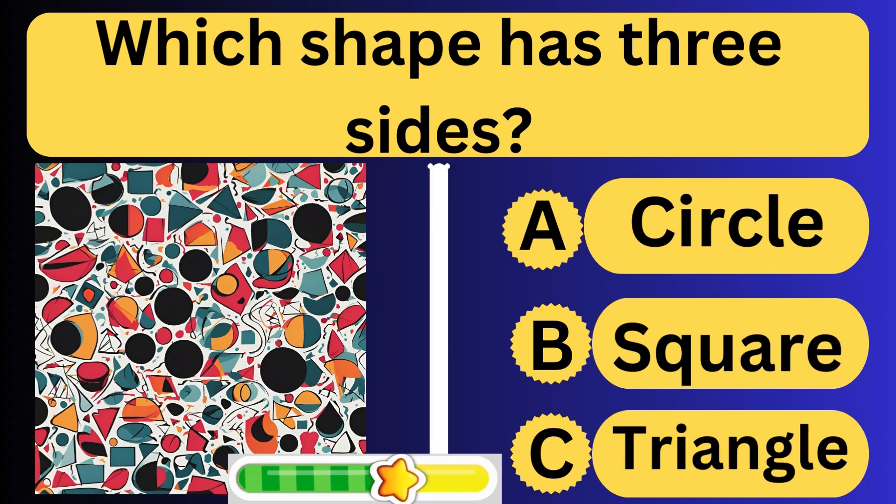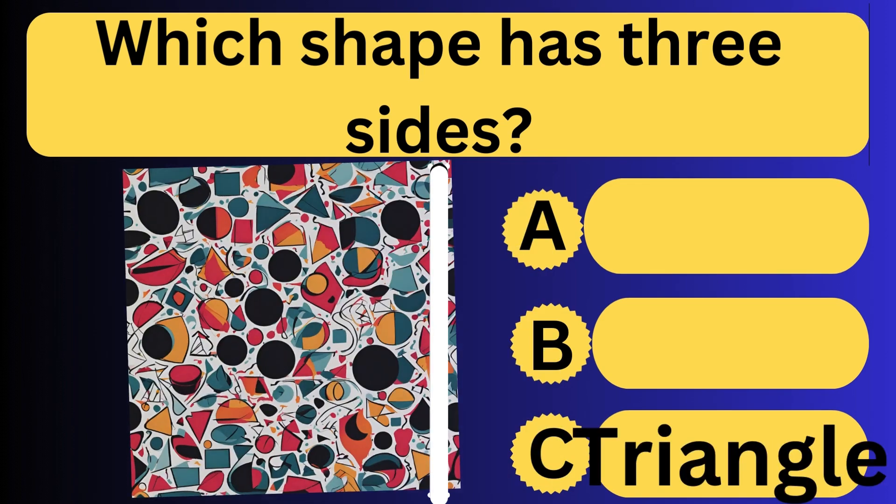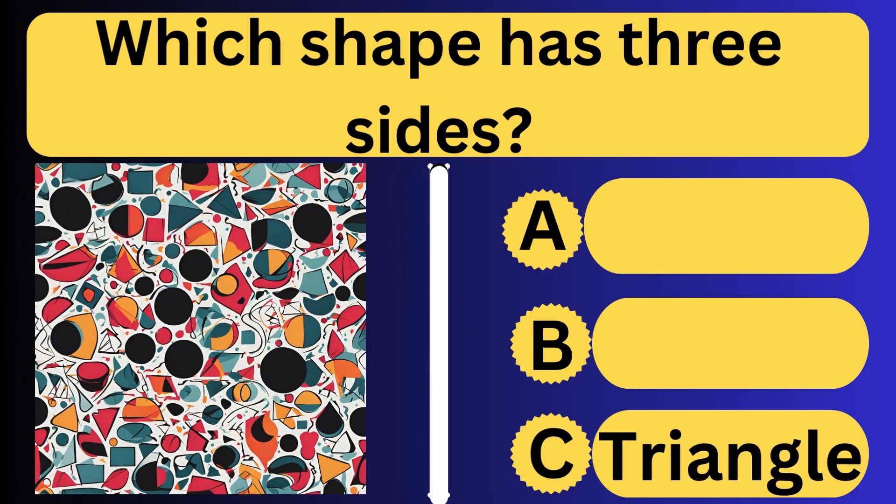Which shape has three sides? Amazing, it's triangle which has three sides.